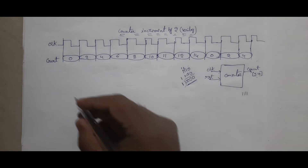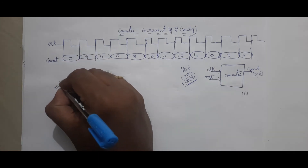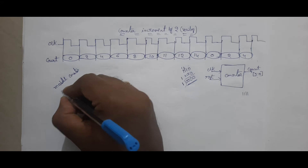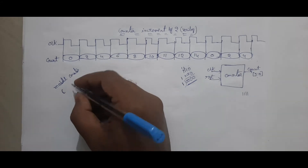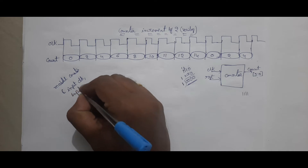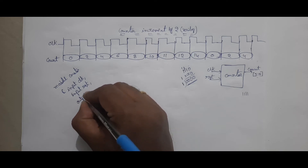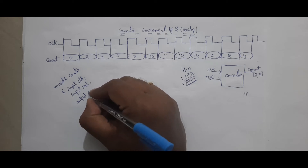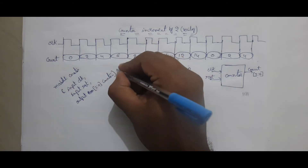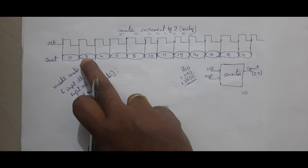Then how can you write the Verilog code for this? Here I am writing the Verilog code. Module name is 'counter', bracket open, input clock, input reset, output — here you have to write [3:0] counter — bracket close, semicolon. This is the module definition. It is saying clock and reset are the inputs, and the output is counter, that is [3:0]. These values will come here.